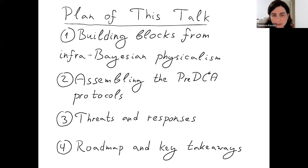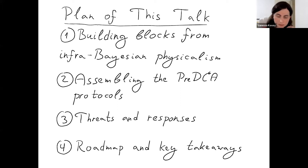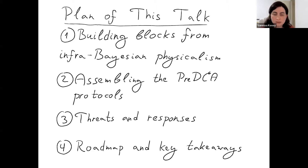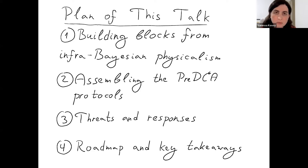This talk will have three parts and a conclusion. I'll start by explaining building blocks we can get from information physicalism, which we'll use to define this alignment protocol. The second part is about the actual protocol — what do we do with these building blocks to make aligned AI. The third part covers threats and responses to those threats. We'll conclude with a roadmap of where we go from here and the key takeaways.